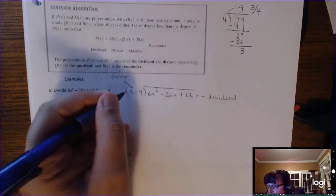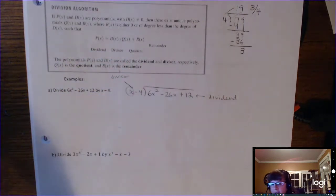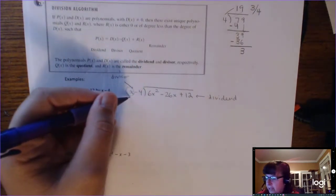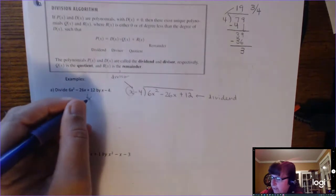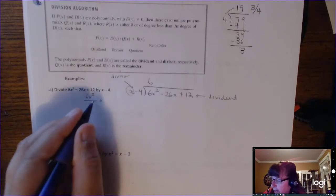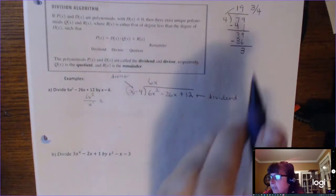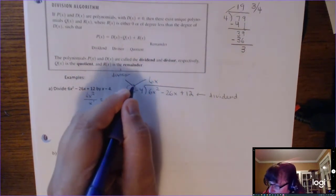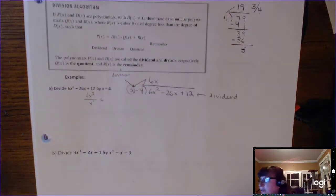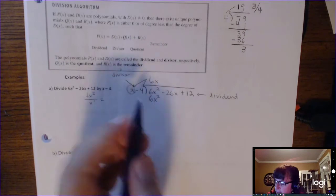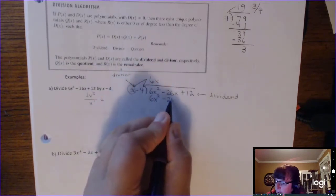What you're going to do is use this leading term x and divide with that. So 6x squared divided by x: x squared divided by x gives you x to the first, so that's 6x. Then, like before, you multiply. But here's where something's a little different — you've got to multiply that 6x to both of those terms. You've got to get the minus 4 involved. So 6x times x is 6x squared, and 6x times negative 4 is negative 24x.